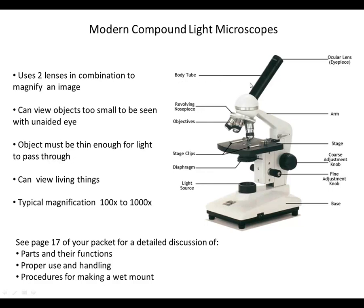The body tube is what the lens system is attached to, and light travels through it from the objective lenses to the ocular lens. That's a quick rundown on the parts and their functions. Over the next couple of days we'll focus on using the microscope appropriately to make observations. On page 17 of your packet there's a detailed discussion of parts and functions, proper use and handling, and procedures for making a wet mount of a specimen.